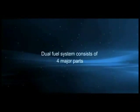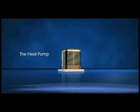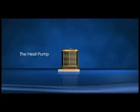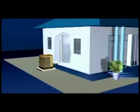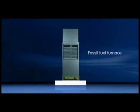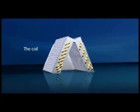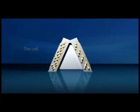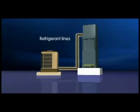The dual fuel system consists of four major parts. The heat pump itself is located outdoors and runs on electricity. A fossil fuel furnace located inside the home. The coil, which is located above the furnace, and refrigerant lines which connect the heat pump to the coil.